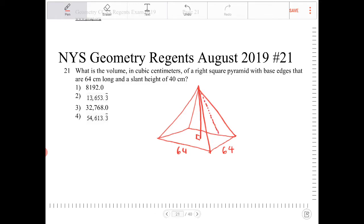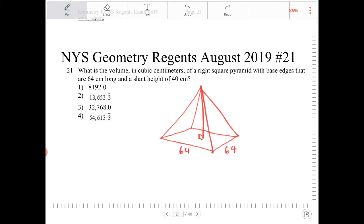I'm actually going to use a different color for this because all the red is just getting confusing. So I'm going to use blue. The slant height is the height of one of the sides of the triangles of the pyramid here. So this length that's in blue, that's 40.